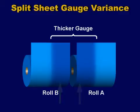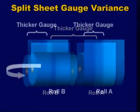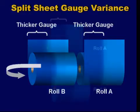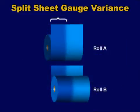Rather than readjust heater settings, roll B can be rotated 180 degrees. Then the heater settings won't have to be changed, and production can continue without temperature readjustments.